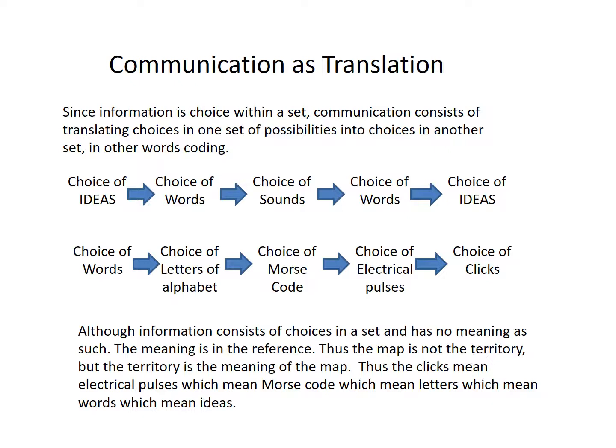In another example, the choice of words is translated into the choice of letters of the alphabet, which is translated into the choice of Morse code, which is translated into electrical pulses, which at the other end of the telegraph line is translated into a choice of clicks on the little clicker. Although information consists of choices in a set and has no meaning as such, the meaning is in the reference. Thus, the map is not the territory, but the territory is the meaning of the map. The clicks mean electrical pulses, which mean Morse code, which mean letters, which mean words, which mean ideas.